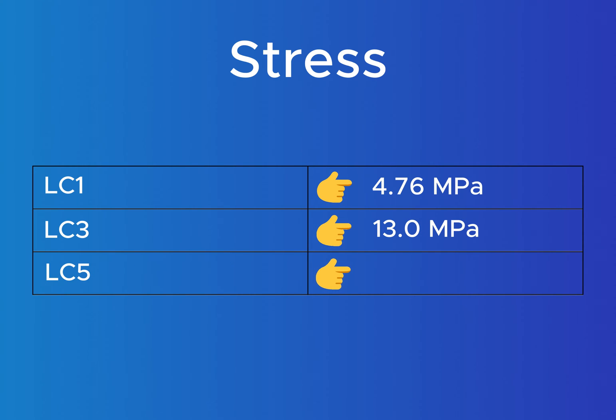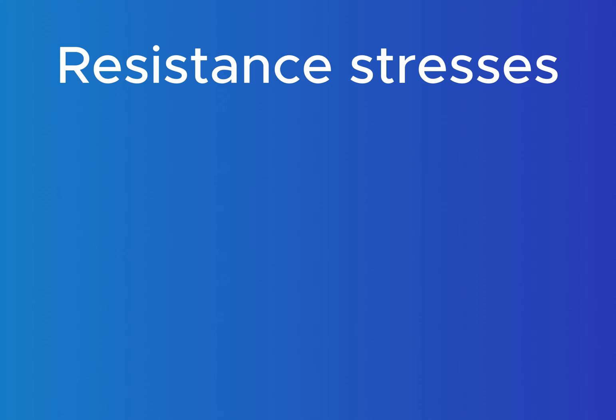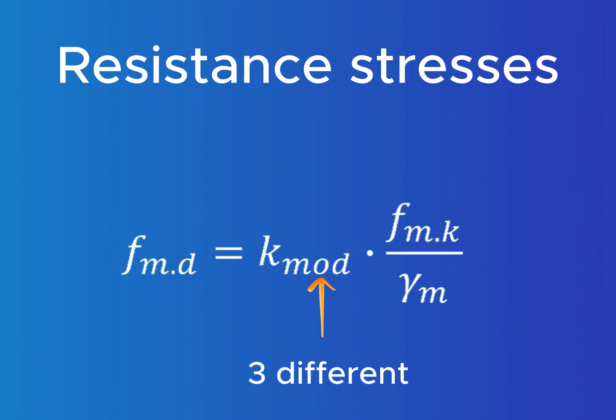In the last step before we can actually check whether or not the cross-section can resist the load, we have to calculate the resistance stresses of the timber materials. And we do that by calculating K-Mod times the bending resistance of the timber material divided by the partial safety factor. Because we have three different K-Mod values, we also get three different bending resistances.